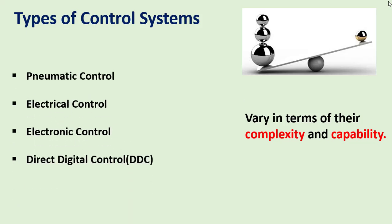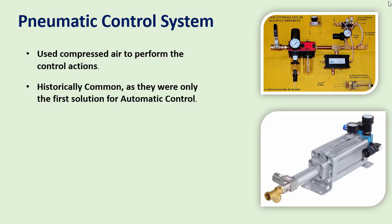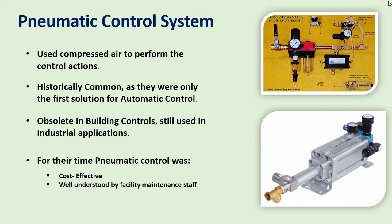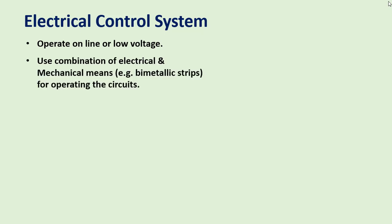Control systems vary in complexity and capability. They are divided into the following categories: pneumatic control, electric control, electronic control, and direct digital control (DDC). A pneumatic control uses compressed air to perform control actions. Historically they were very common as the first solution for automatic control, but nowadays they are obsolete in building controls, though still used in industrial applications.